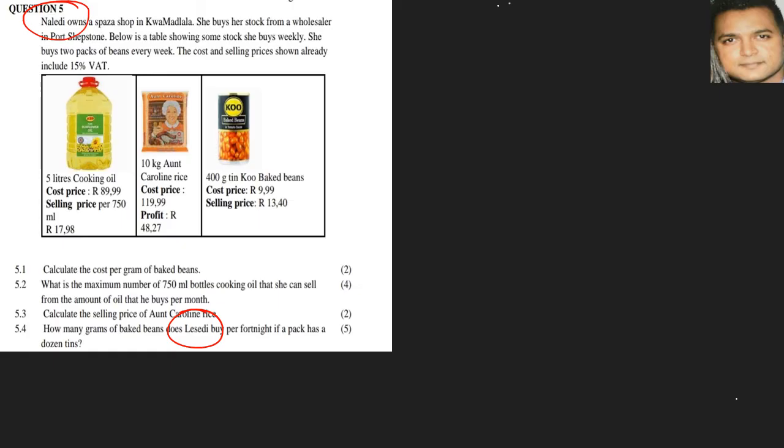So we are told that there is a dozen tins in one pack. So one pack is a dozen tins. That will be 12 tins. Then we are told that the person buys two packs per week. This information is given here at the top. And then also we are further given that this information they're speaking about is a fortnight, so that will be two weeks that we're speaking of.